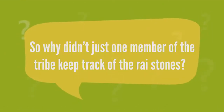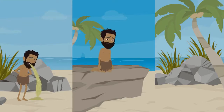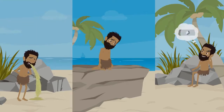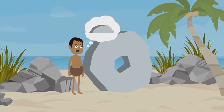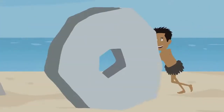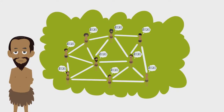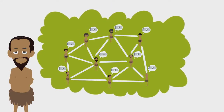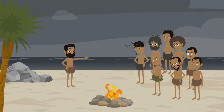So why didn't just one member of the tribe keep track of the rye stones? What if that main record keeper was sick, unable to do their job, or was found to be dishonest? If the only copy of the ledger was changed by any means, wealth would be lost or gained unfairly. The Yapese knew their distributed ledger system safeguarded against tampering since all the Yapese knew who owned what.